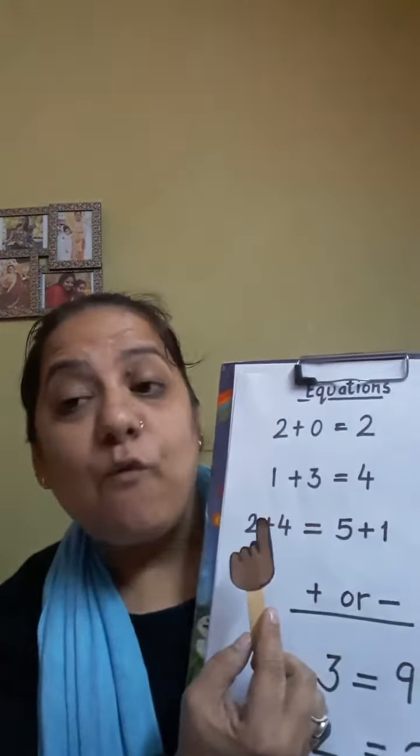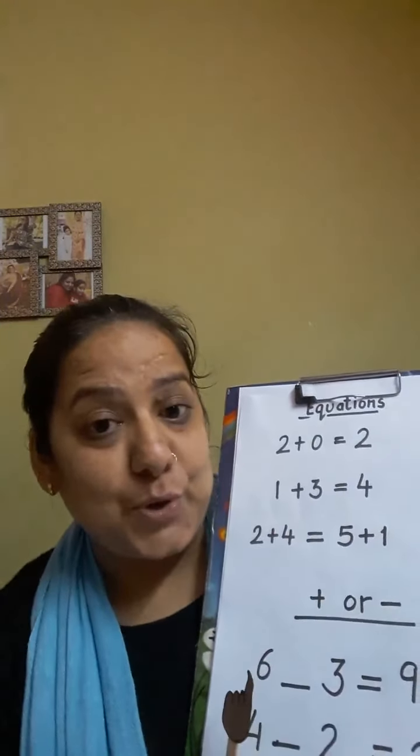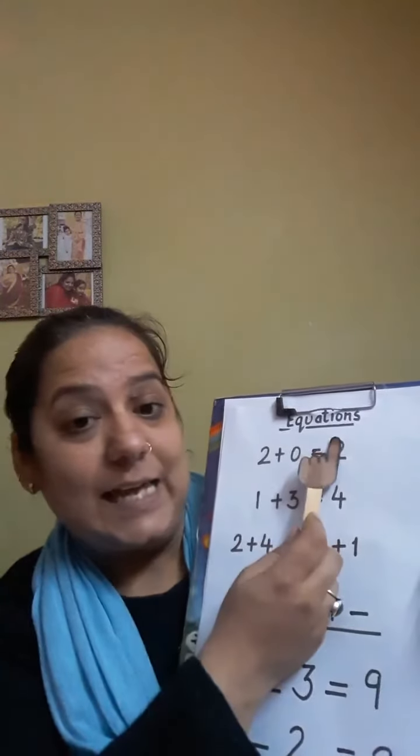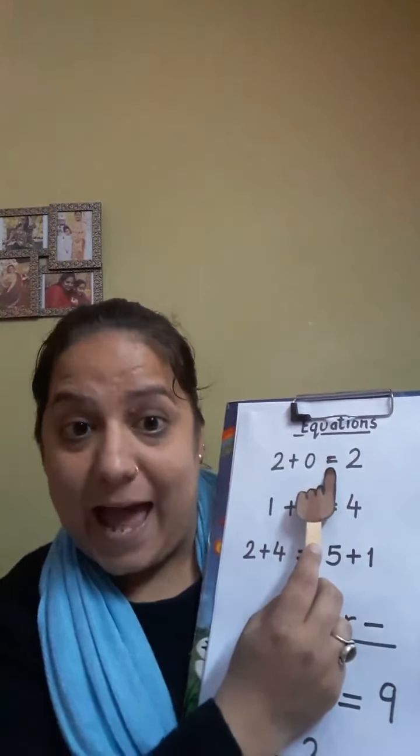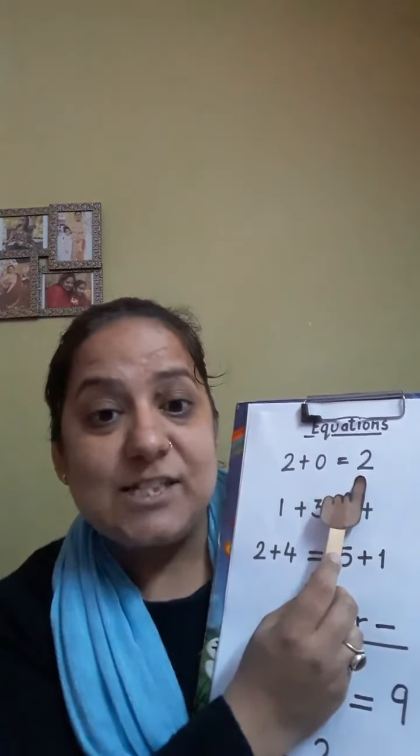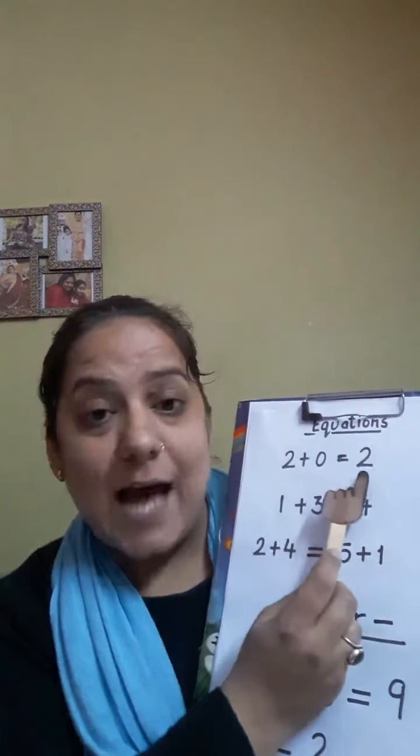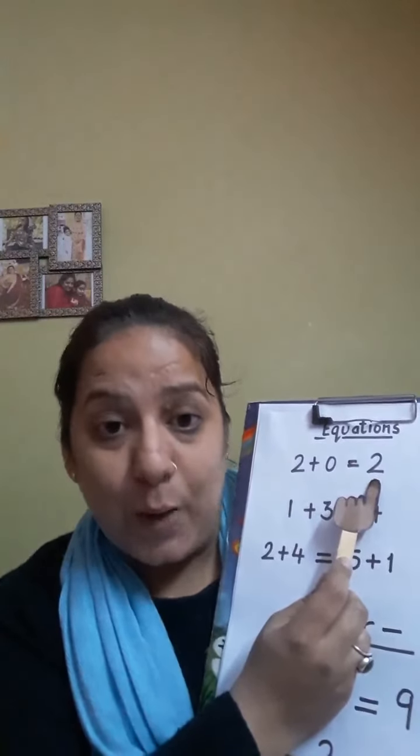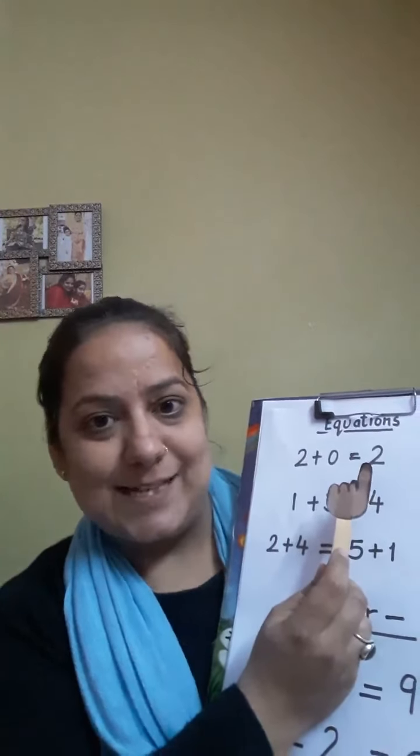So let's find out what equations are. Let me show you some examples. As you can see, the equations have equal sign and both the sides of an equation must be having the same value. So both the sides of an equation must be having equal value. So let's see how does this equation works.